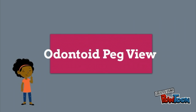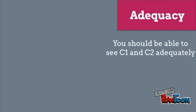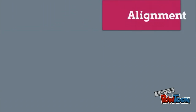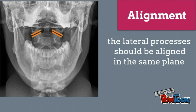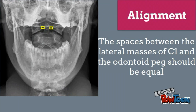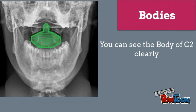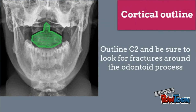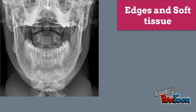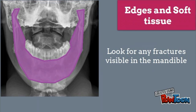Odontoid peg view. Adequacy: you should be able to see C1 and C2 adequately. Alignment: the lateral processes should be aligned in the same plane, and the spaces between the lateral masses of C1 and the odontoid peg should be equal. Bodies: you can see the body of C2 clearly. Cortical outline: outline C2 and be sure to look for fractures around the odontoid process. Edges and soft tissue: look for any fractures visible in the mandible.